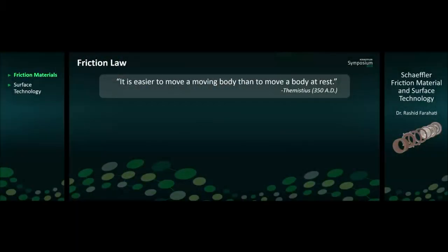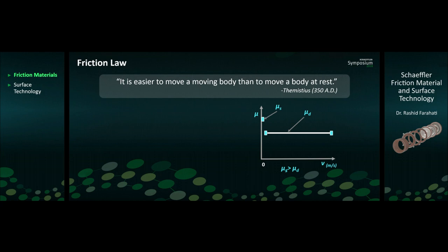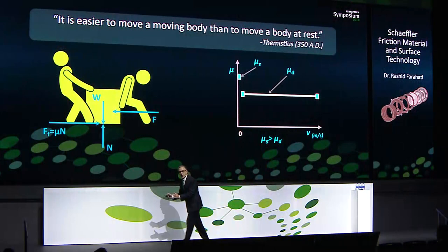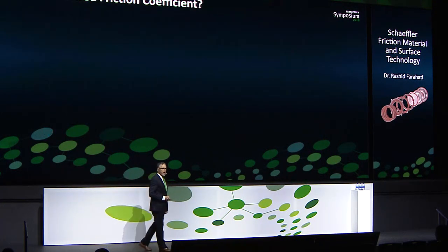I start friction material with a quote from 1700 years ago. Timotheus said about the friction law: it is easier to move a moving body than to move a body at rest. In other words, dynamic friction is lower than static friction. We don't need a scientist to tell us this — even from childhood we had this experience. When we wanted to move a box on the floor, at the beginning it's very difficult, but as soon as it breaks away, it's easy to move. Keep this in mind — that's going to be our challenge to design good friction material for clutch applications.